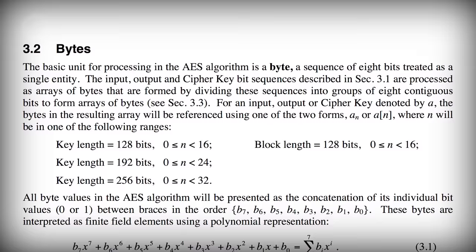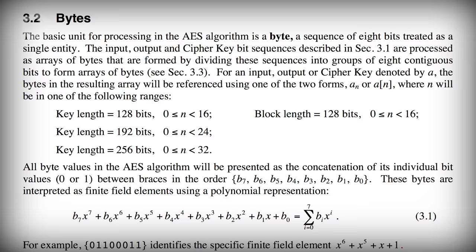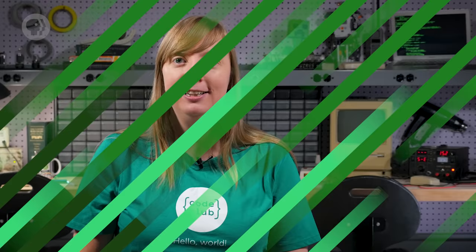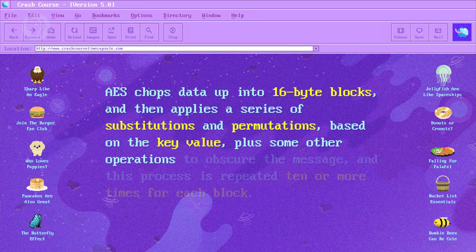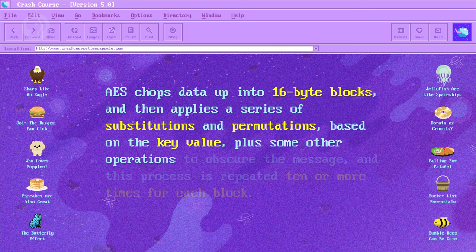So in 2001, the Advanced Encryption Standard — AES — was finalized and published. AES is designed to use much bigger keys: 128, 192, or 256 bits in size, making brute force attacks much harder. For a 128-bit key, you'd need trillions of years to try every combination even using every computer on the planet. AES chops data up into 16-byte blocks and applies a series of substitutions and permutations based on the key value, plus other operations to obscure the message, repeated 10 or more times per block. It's a performance trade-off — AES balances performance and security and is used everywhere today, from encrypting files on iPhones and Wi-Fi with WPA2, to accessing websites using HTTPS.